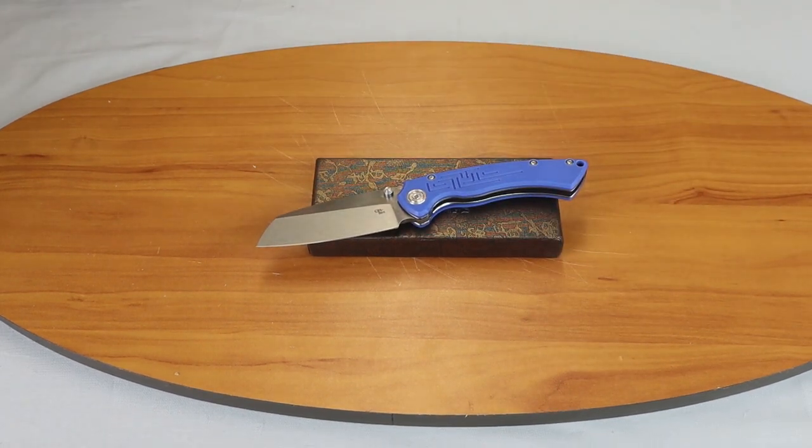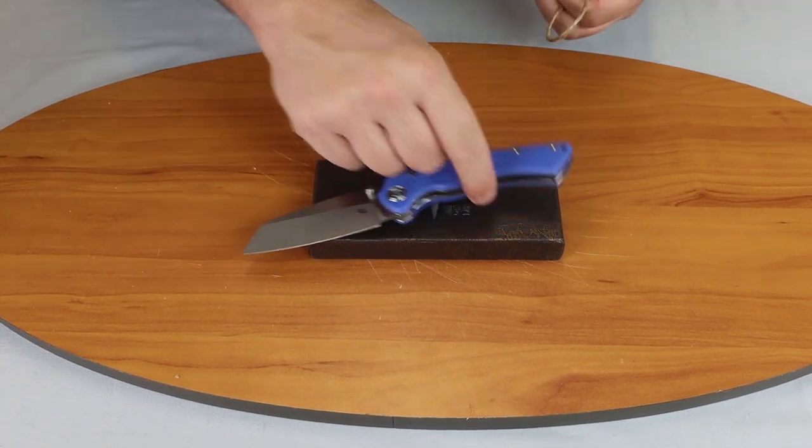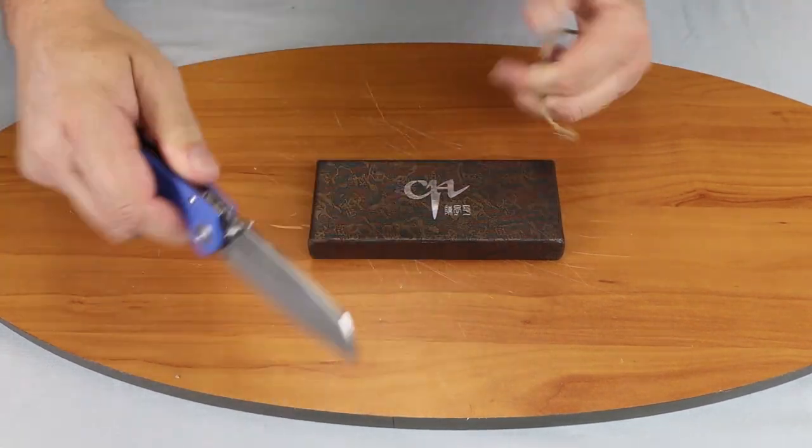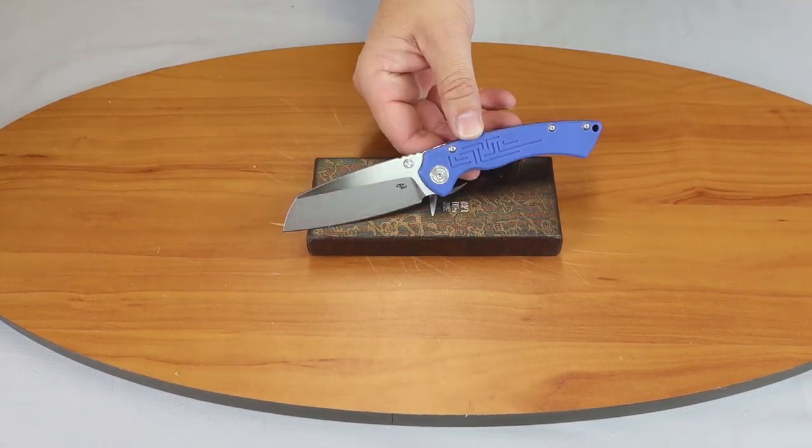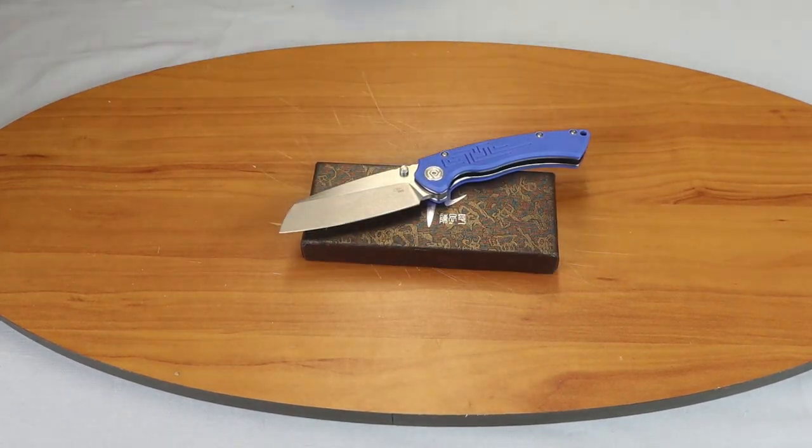Let's show you how this knife cuts. We'll start on something simple. As you can see it goes right through the jute. Which it should.